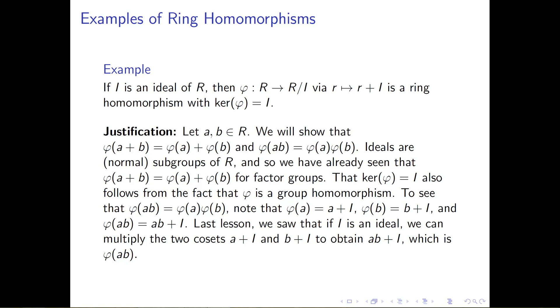That is, we were able to multiply two cosets a plus I and b plus I, and the way in which we did this was by multiplying the individual elements and then adding on the ideal I.